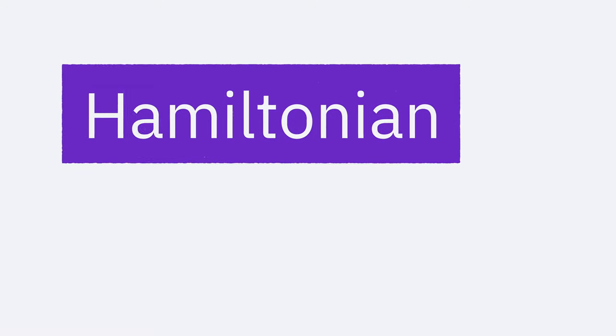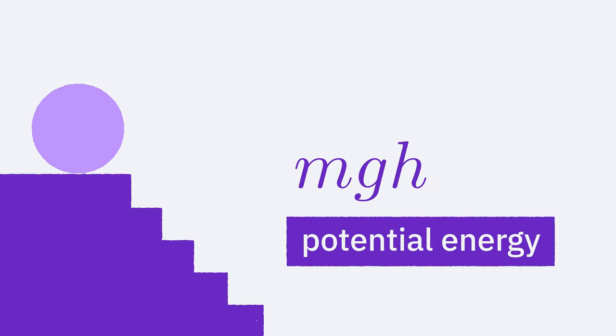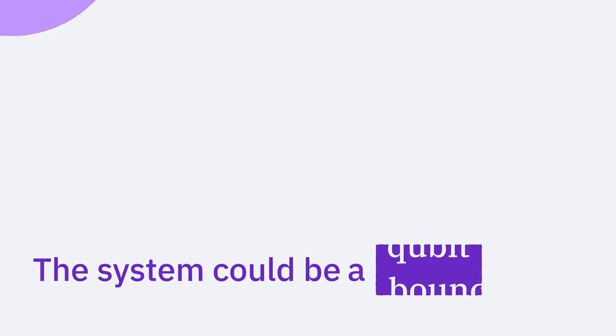In quantum mechanics, a Hamiltonian is a mathematical description of the total energy of a system, incorporating both kinetic and potential energy. The system being described could be anything – a molecule, a single qubit, or a bouncy ball.